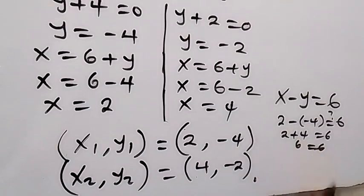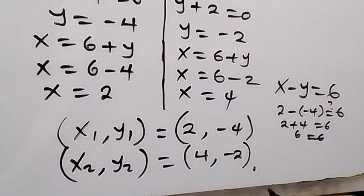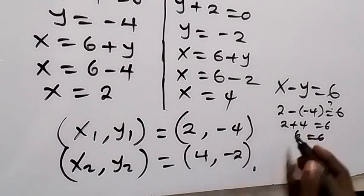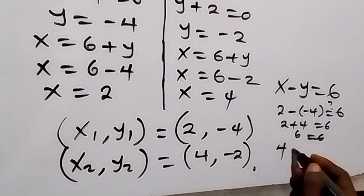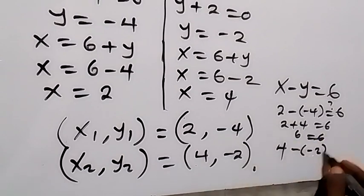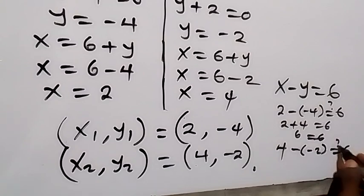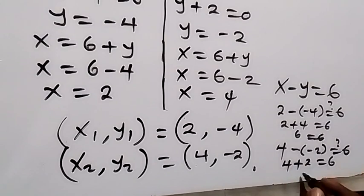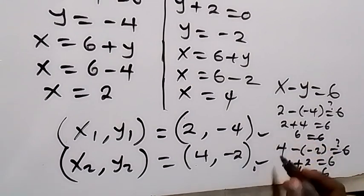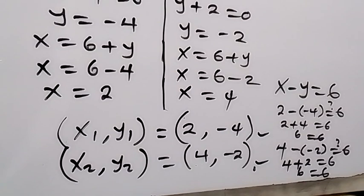For the second set of solutions, x equals 4 and y equals minus 2: 4 minus (minus 2) equals 4 plus 2 equals 6. We have 6 equals 6. Therefore both sets of solutions are valid solutions to this problem.